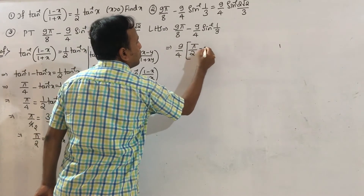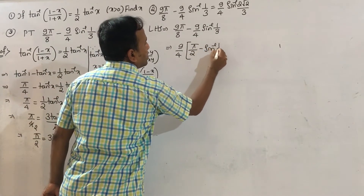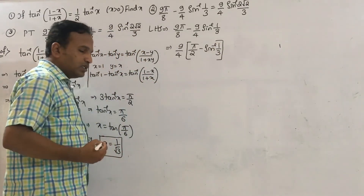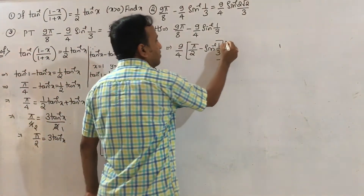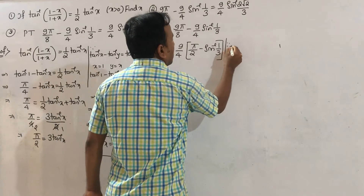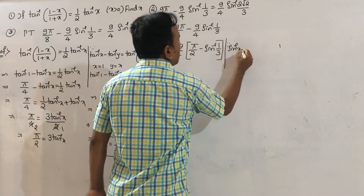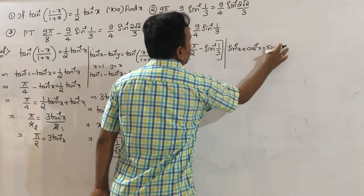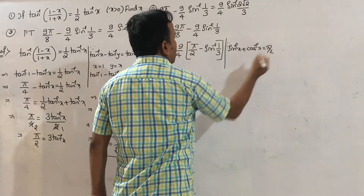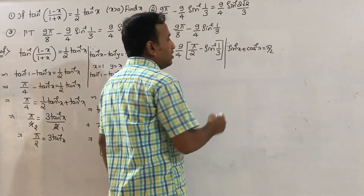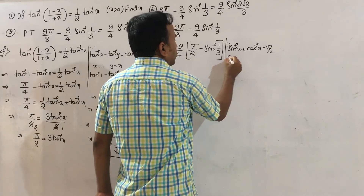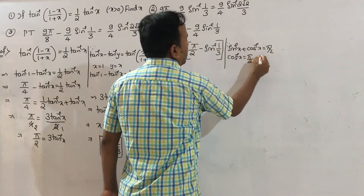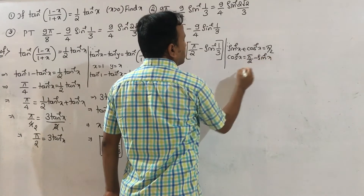Consider pi by 2 sin inverse (1 by 3). We use one more formula: sin inverse x plus cos inverse x equals pi by 2. Therefore cos inverse x equals pi by 2 minus sin inverse x.